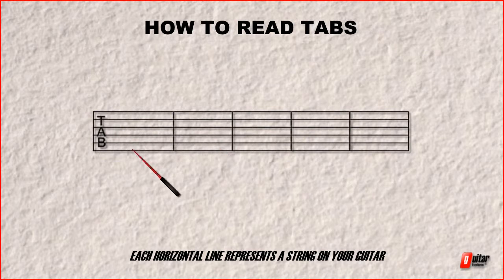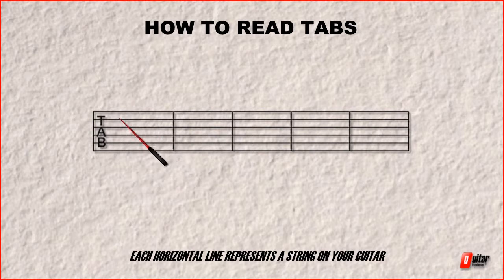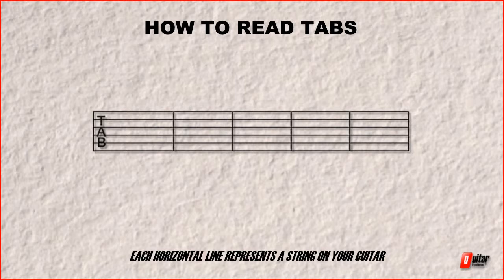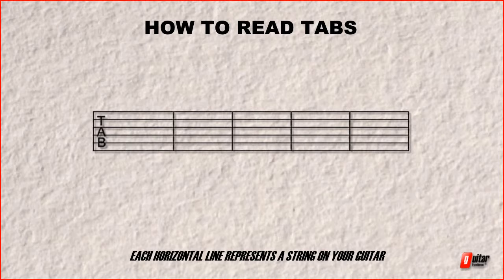So we can see here we have six horizontal lines. Now each one of those horizontal lines represents a string of your guitar. Six strings, six horizontal lines. And obviously that tab will be adjusted if you have a seven or eight string guitar. Just like bass tabs would therefore only have four lines because they only have four strings.